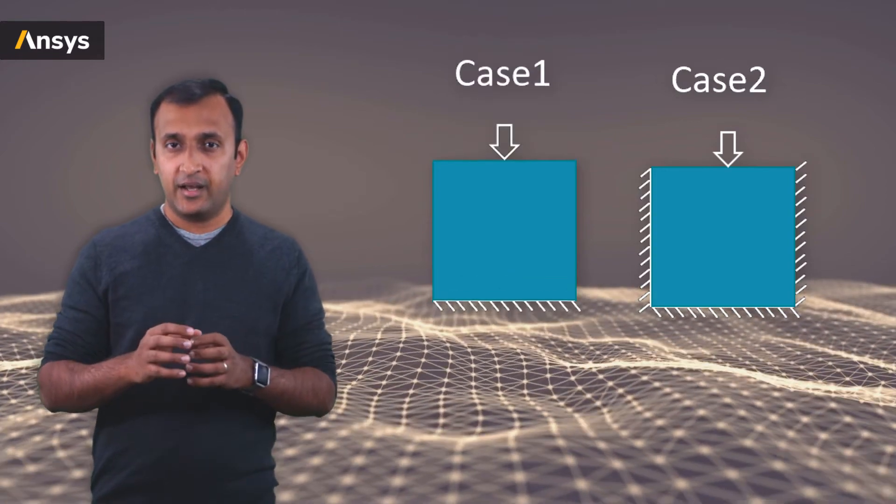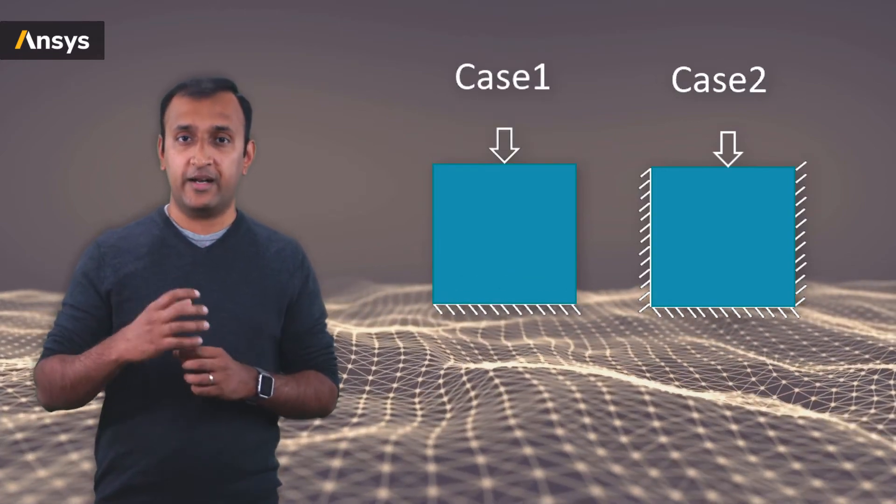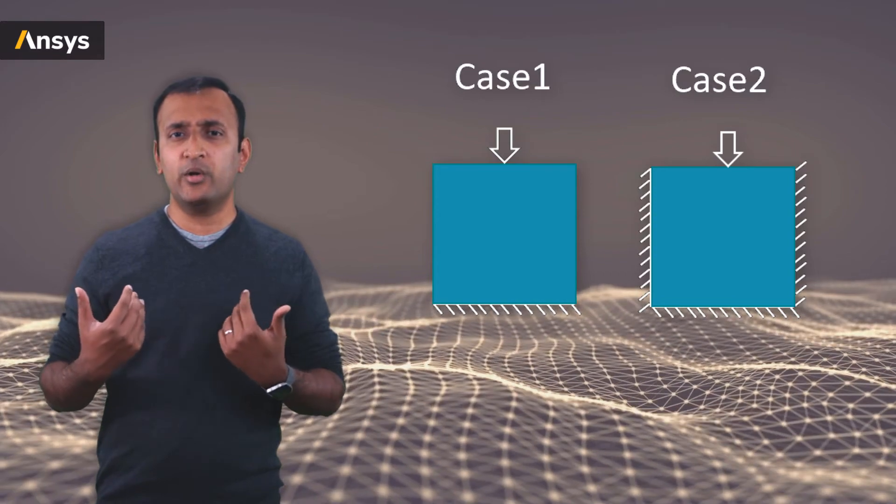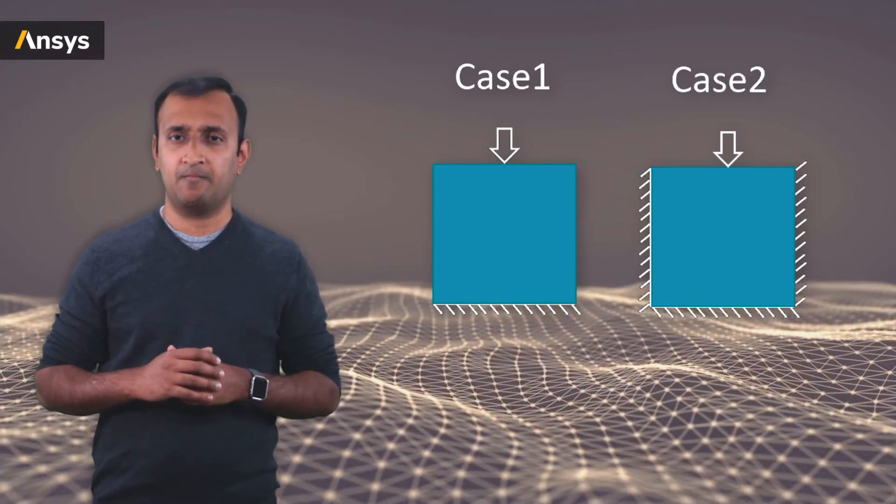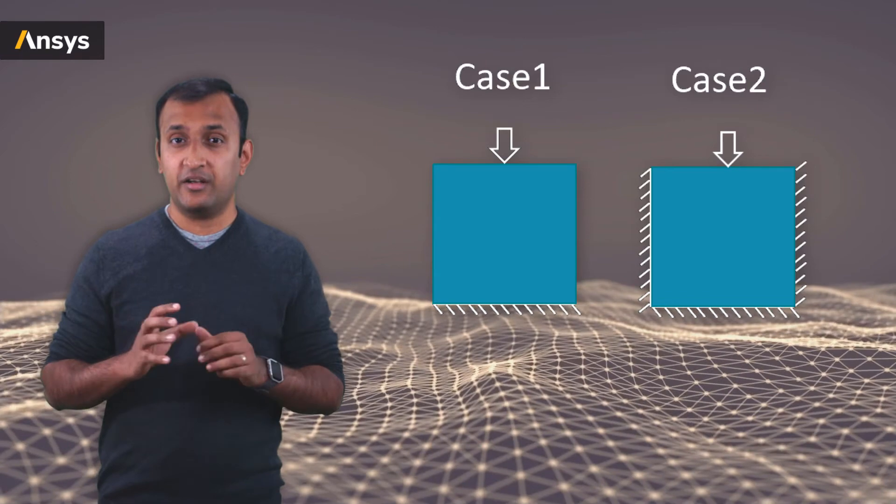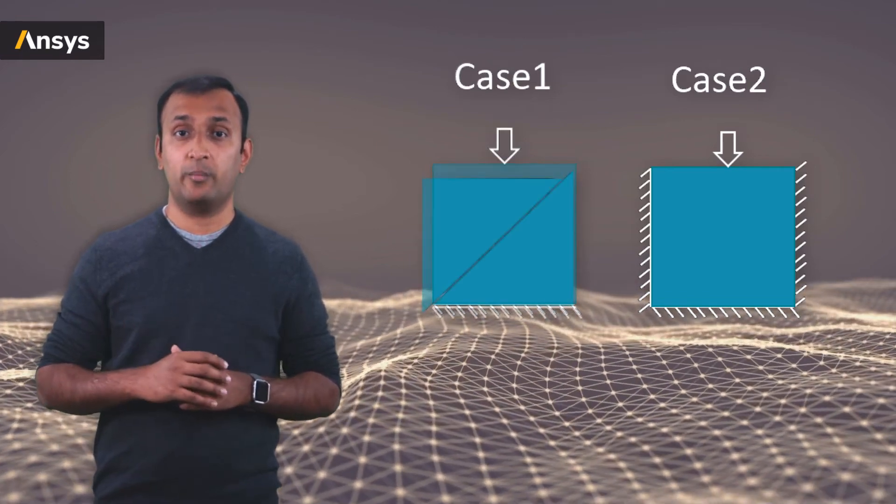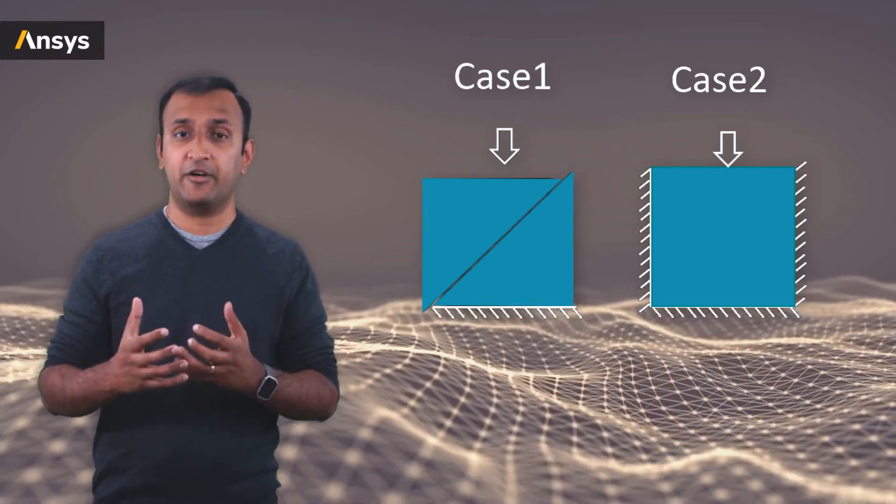In the first case, we constrain the block in only one direction and keep it free to deform in all the other directions. In this state, much of the deformation is deviatoric, so the majority of the stress is deviatoric.